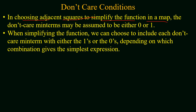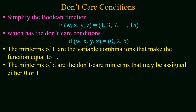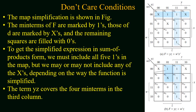When choosing adjacent squares to simplify a boolean function, the don't care min terms may be assumed to be either zero or one. When simplifying the function, we can choose to include each don't care min term with either ones or zeros depending on which combination gives the simplest expression. In the given example, you have to simplify a four-variable boolean function whose min terms lie at 1, 3, 7, 11, and 15, and the don't care conditions lie at 0, 2, and 5. The min terms of the function make it equal to one, and the don't care min terms may be assigned to either zero or one.